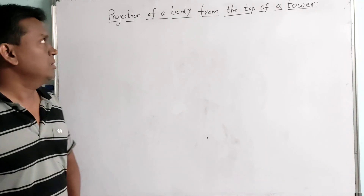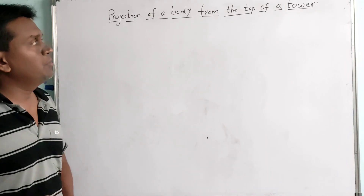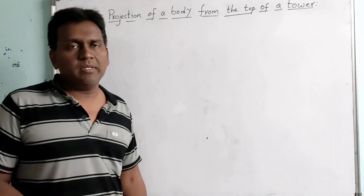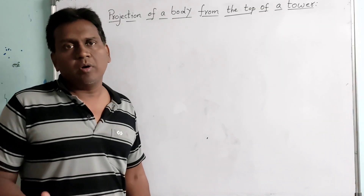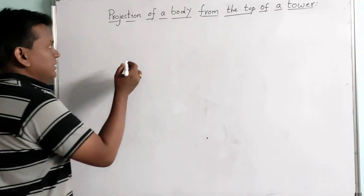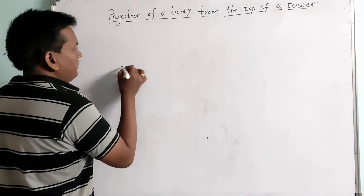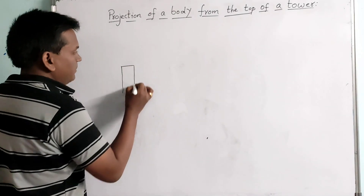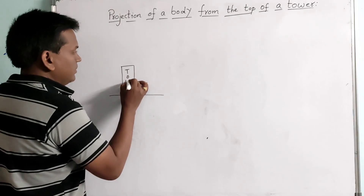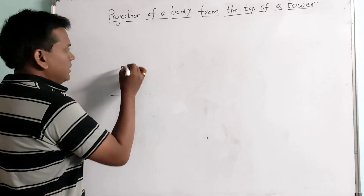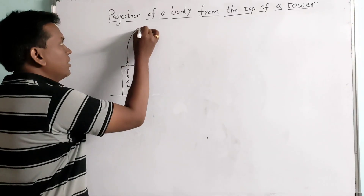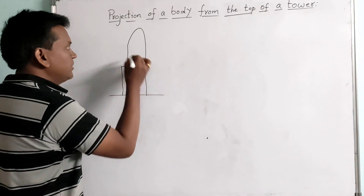Let's have a look at the projection of a body from the top of a tower. From the top of the tower, let us consider a body is projected vertically upward. Here is a tower, and this is a body which is projected vertically upward from the top of the tower.